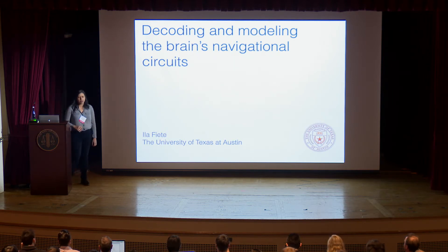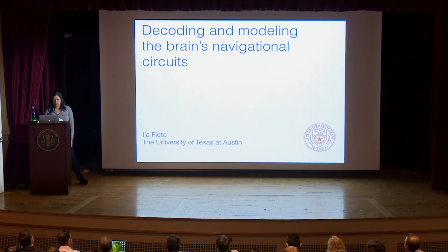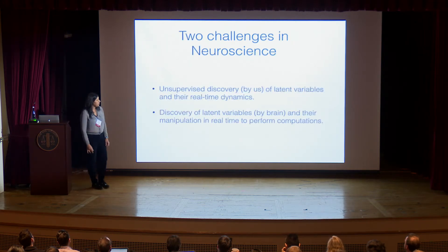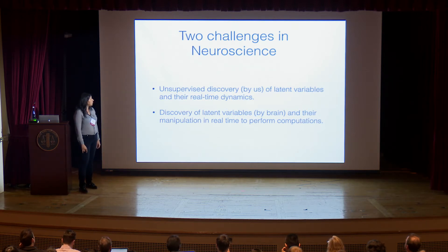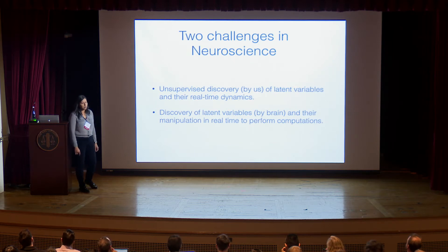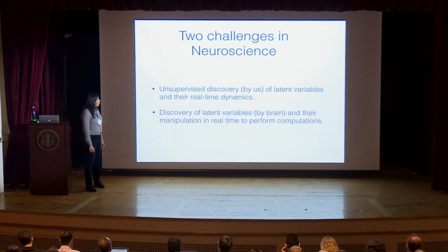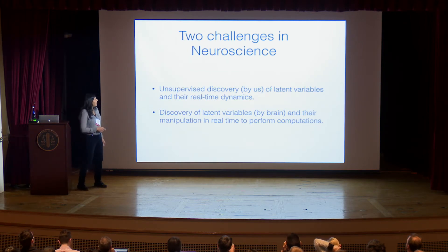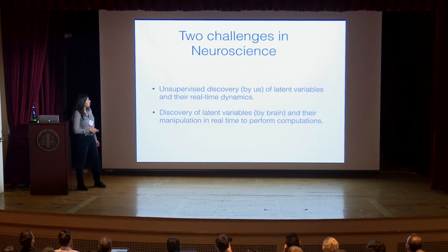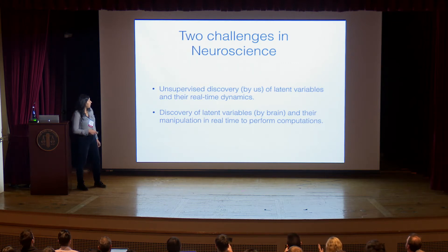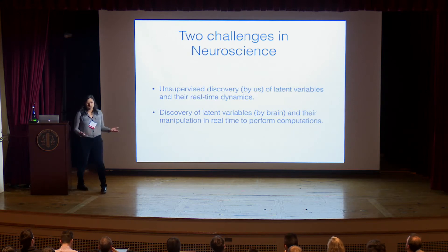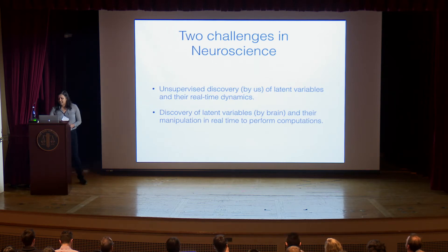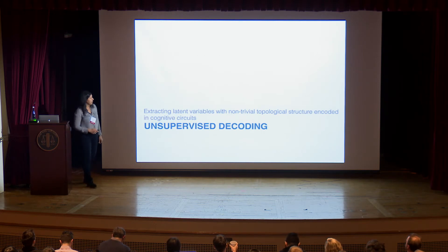I want to tell you a bit about a couple of problems we've been working on recently. It's very opportune that I speak right after Matt and also before David. I want to talk about two challenges common to the field of neuroscience. One is the question of unsupervised discovery of latent variables encoded in the brain — the real-time dynamics of these latent variables. The second is the discovery of latent variables about the world by the brain, and how the brain manipulates those latent variables in real time.